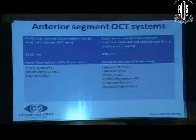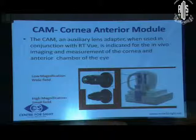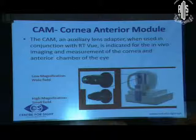Add-on lenses are also available with systems designed primarily for posterior segment imaging, like RTVue. It uses a cornea anterior module which is of two types — CAM-L and CAM-S — that provides us with various scan options.